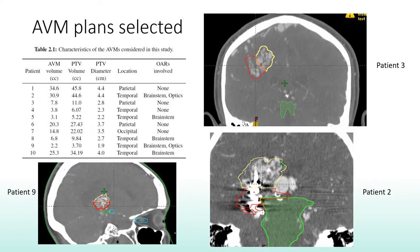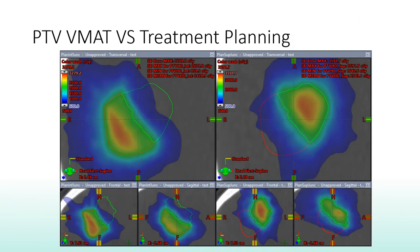We collected 10 patients with a range of AVM sizes and locations to create volume stage plans. The stages are shown in red and yellow, the brainstem in green and optics in blue. AVM volumes ranged from 2.2 to 34.6 cc and were all divided into approximately equal volume stages. For all plans, we used a single fraction of 20 Gy for all stages.